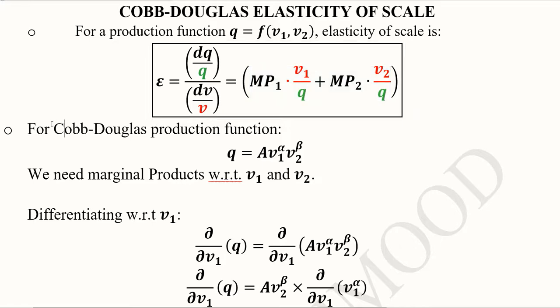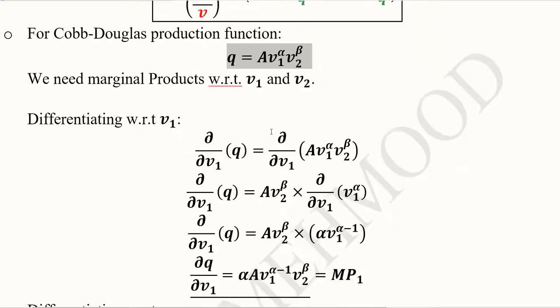Now we are going to focus on the Cobb-Douglas production function in its standard form. We remember its standard form is Q = A V1^α V2^β. Here what we are missing is the MP1 and MP2. Otherwise V1, V2, and Q are available. So we need MP1 and MP2.